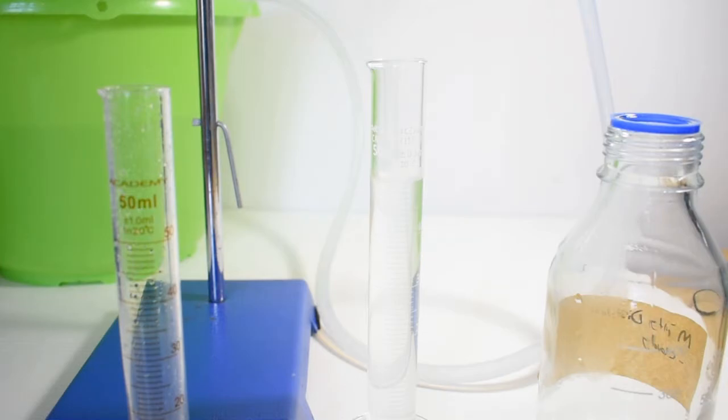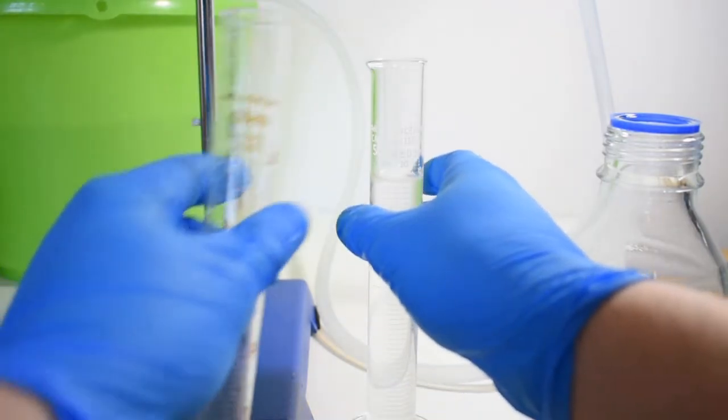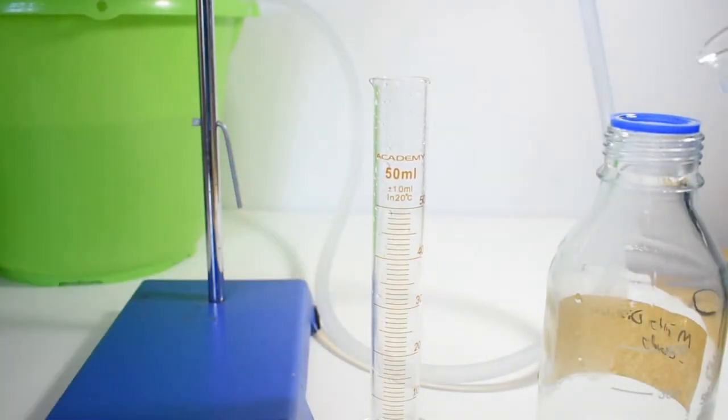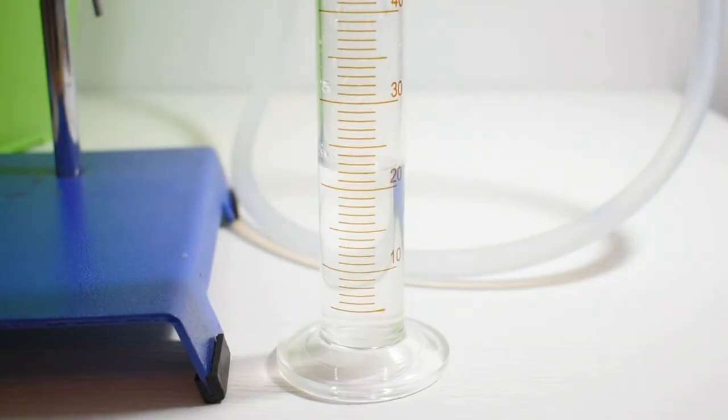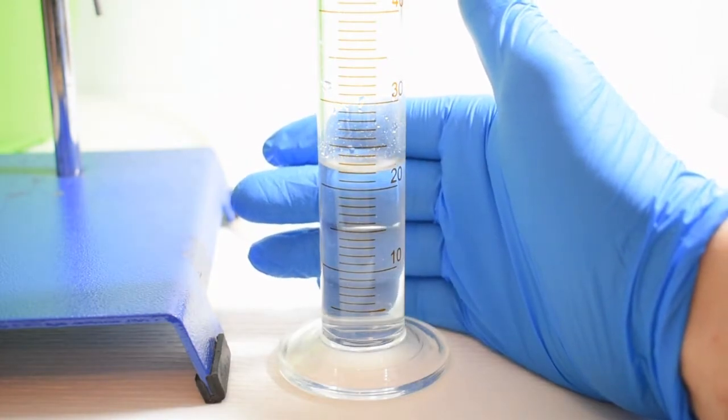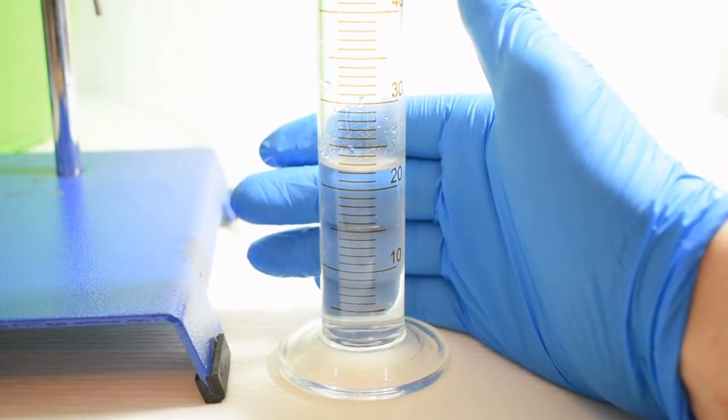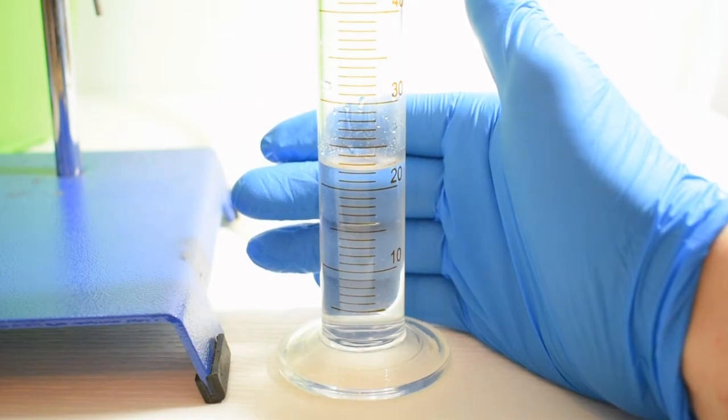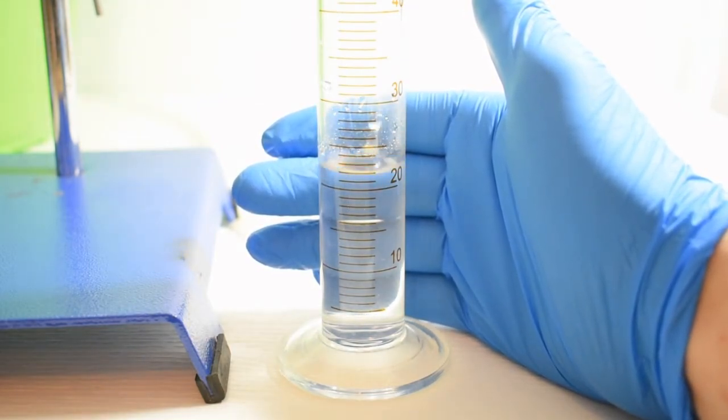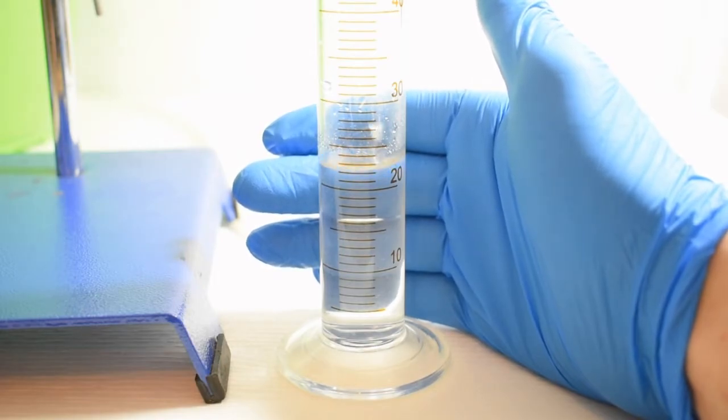Once 50 milliliters of distillate has been collected, the measuring cylinder is swapped out and the distillate is added to a bottle. The second distillate to come over is quite a lot less cloudy, and this indicates the presence of less oil. So I'm going to collect another 50 milliliters and then stop the distillation and refresh the mint in the flask.